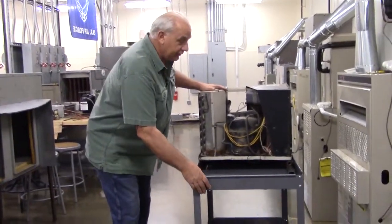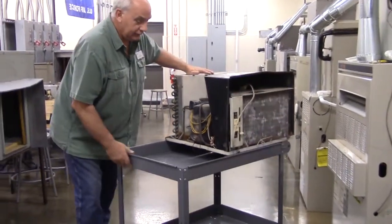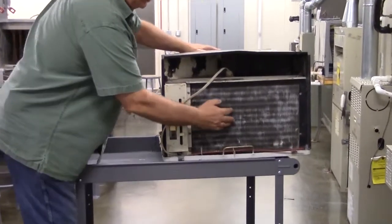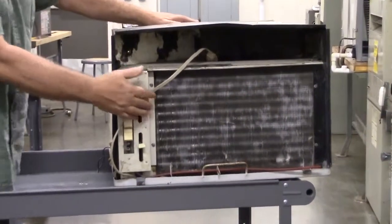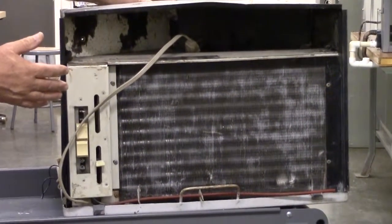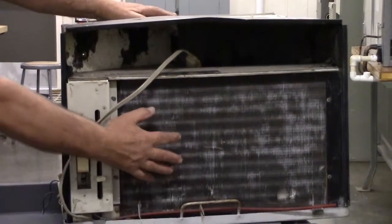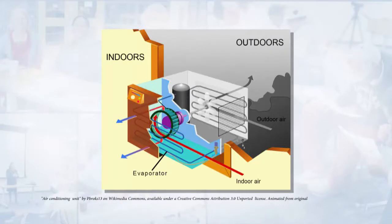The evaporator is this coil here. This would be on the inside of the room we want to condition and the air is drawn in across this evaporator. The refrigerant is boiling inside that evaporator and that absorbs the heat out of the air into the evaporator and into the refrigerant.